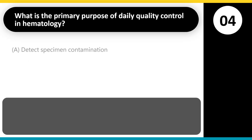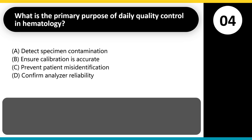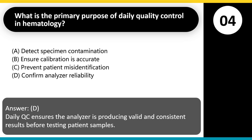What is the primary purpose of daily quality control in hematology? A. Detect specimen contamination. B. Ensure calibration is accurate. C. Prevent patient misidentification. D. Confirm analyzer reliability. Answer: D. Daily QC ensures the analyzer is producing valid and consistent results before testing patient samples.